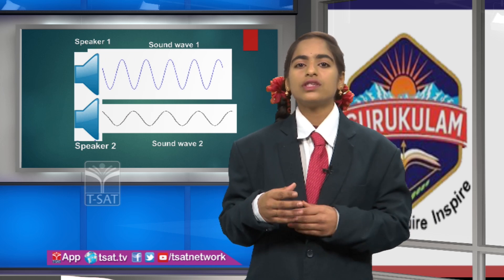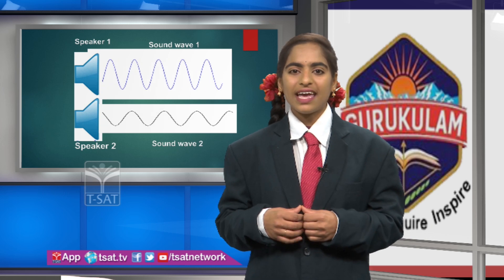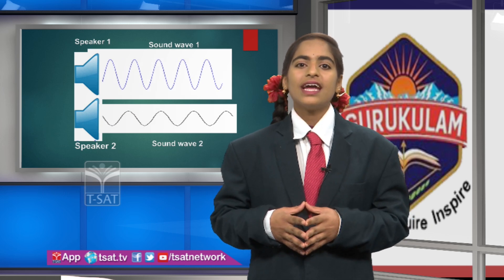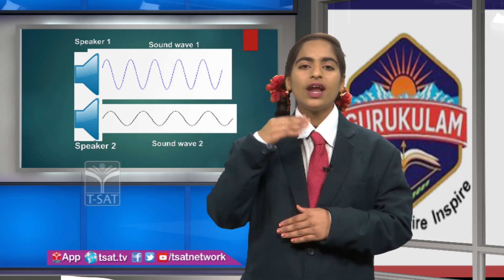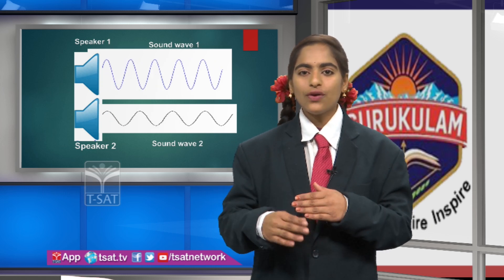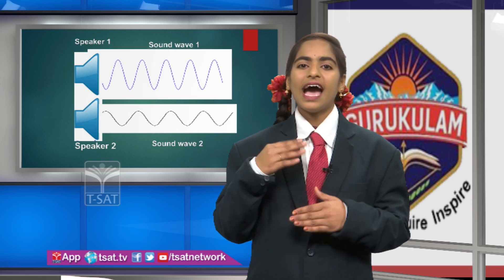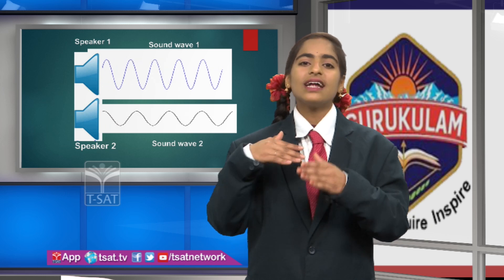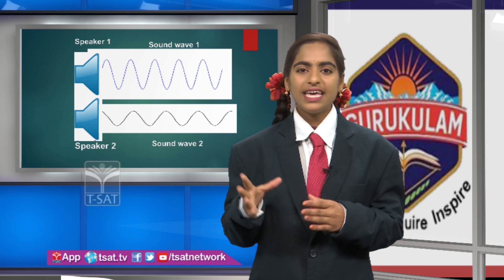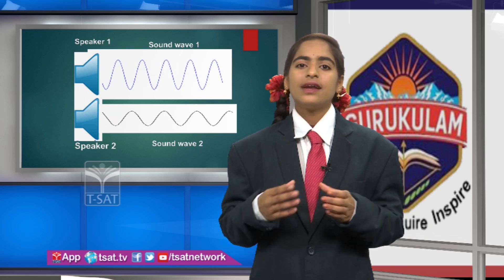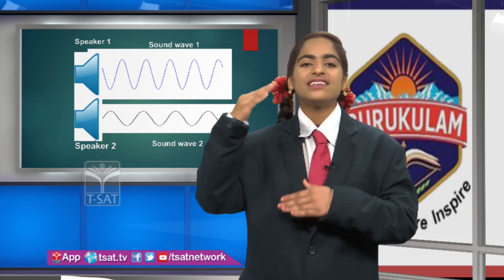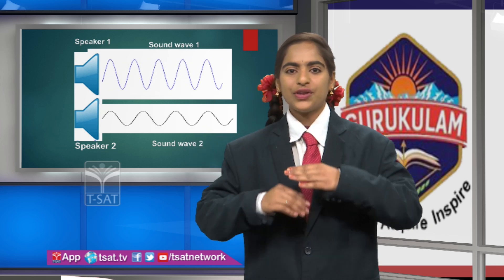When two sound waves travelling in the air in the same medium, their intensity may be low or high. Intensity low means destructive interference. Intensity high means constructive interference. When sound waves travel in the air, they interfere with each other and produce alternately constructive interference and destructive interference.